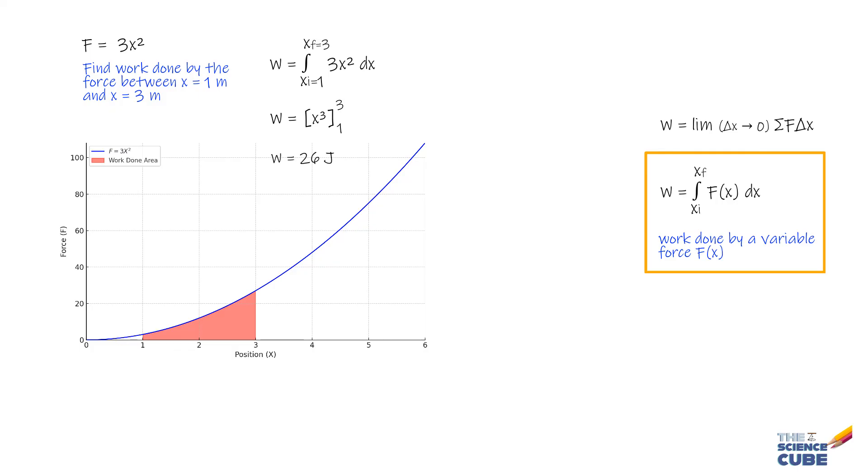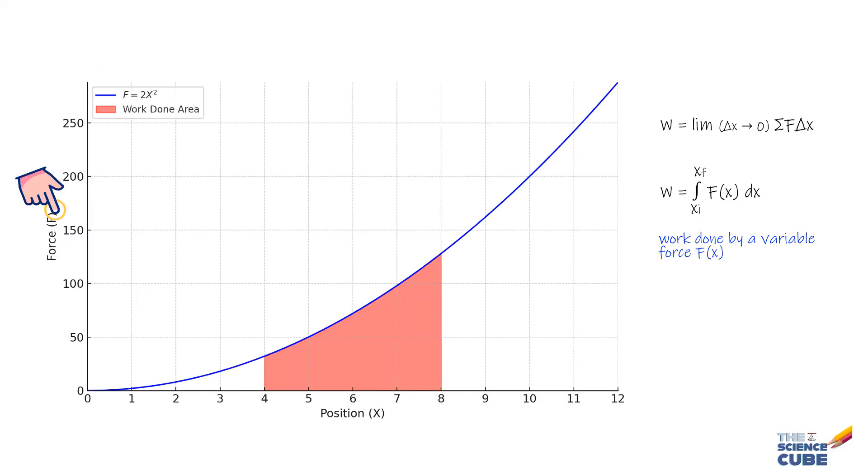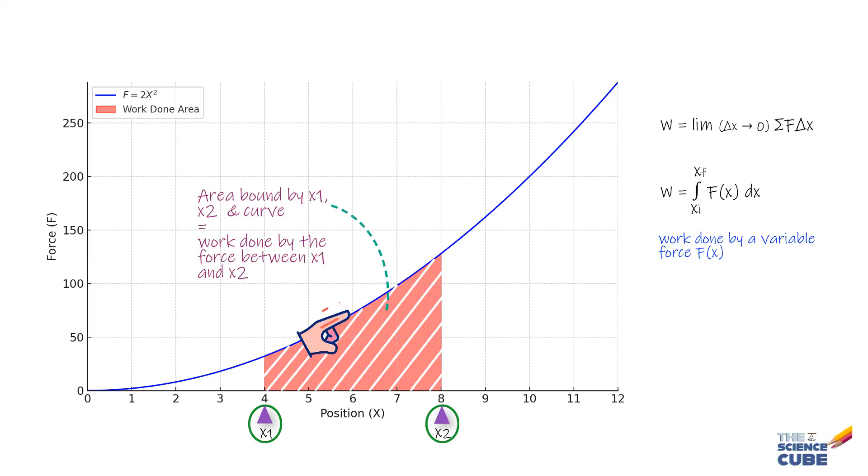So, the important thing to remember is that if you are given a force versus displacement graph and you are asked to find the work done between two positions, x1 and x2, then the area bound between x1 and x2 and the curve is equal to the work done by the variable force in that interval.